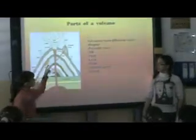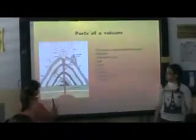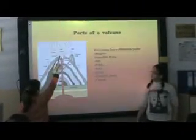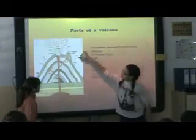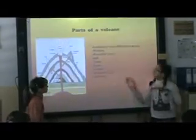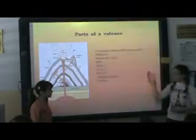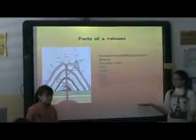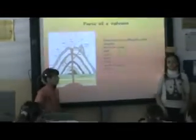I'm going to explain to you the parts of the volcano: the lava, the parasitic cone, the ash, and the central pipe. The volcanoes have different parts. But what is magma? Magma is a liquid rock inside the volcano.